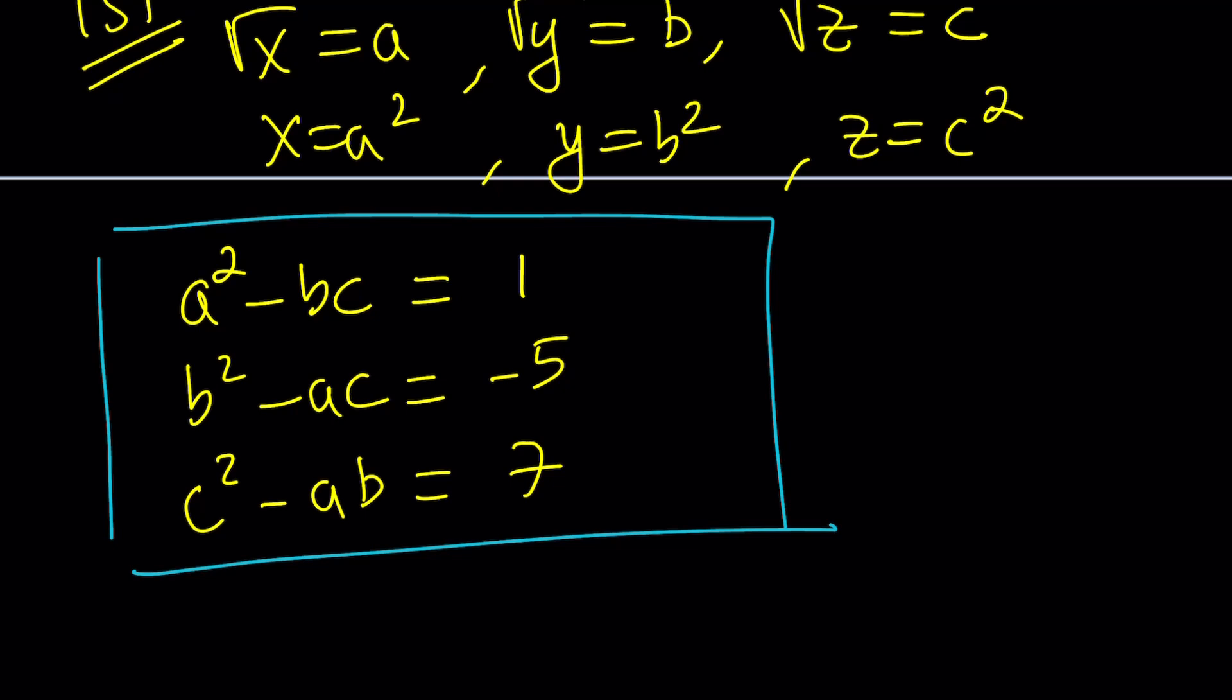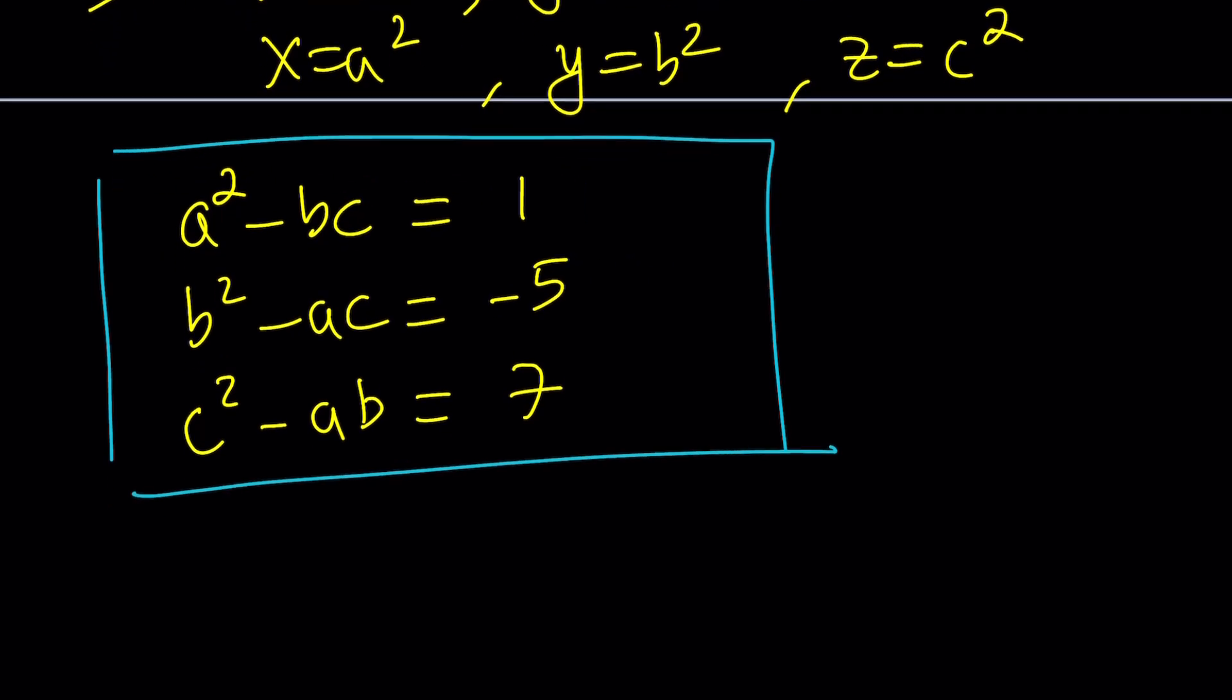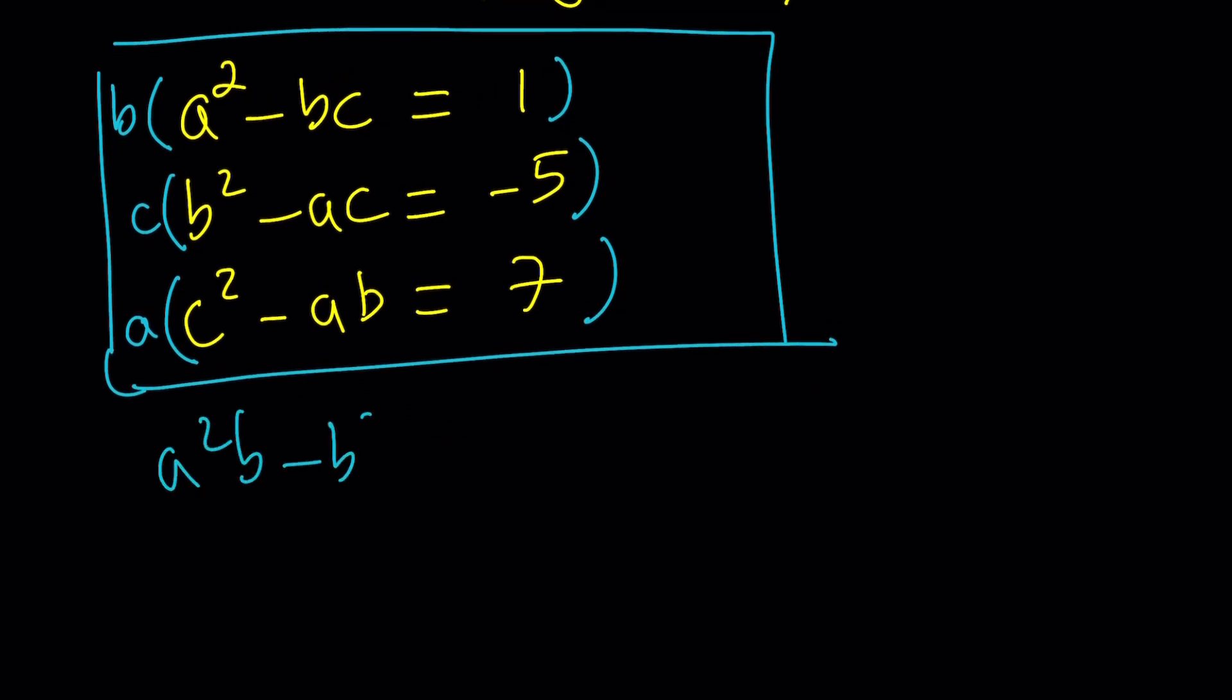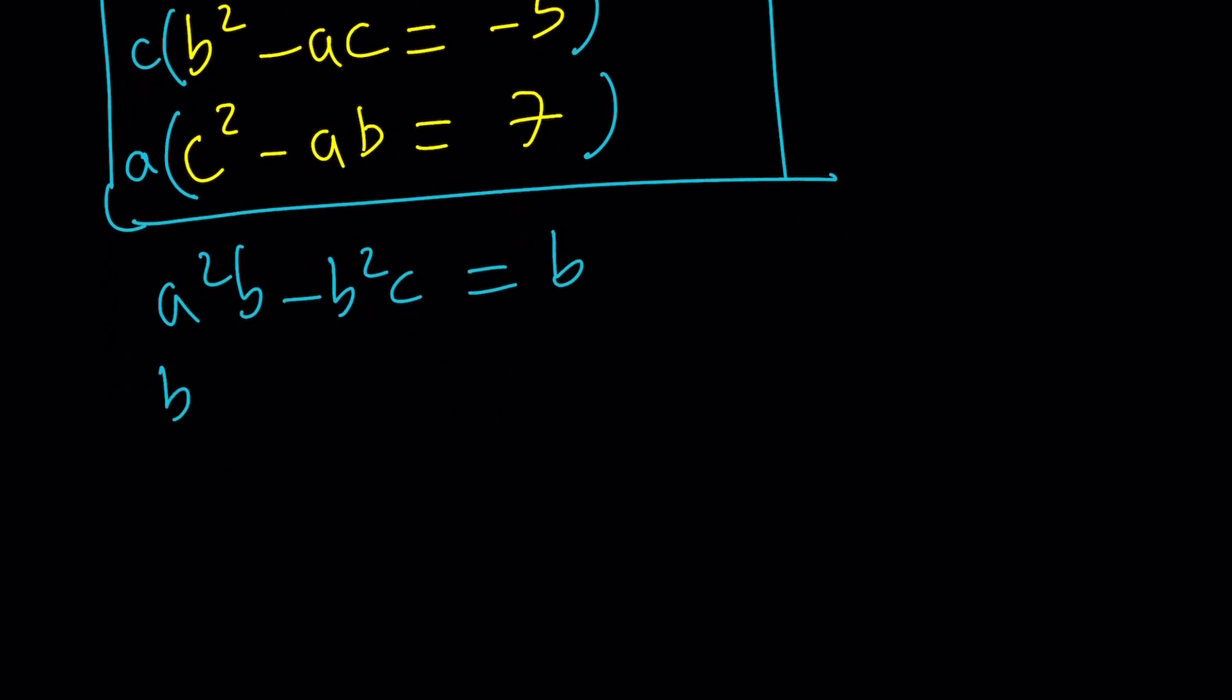Try to keep track of everything we do here. Something awesome that works with systems sometimes. We're going to multiply each of these equations by one of the variables in such a way that everything turns out to be awesome. First equation, I'm going to multiply by b. The second equation, I'm going to multiply by c. And then multiply the third one by a. So we get a squared b minus b squared c equals b. And then b squared c minus c squared a equals negative 5c. And c squared a minus a squared b equals 7a.